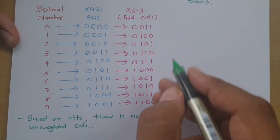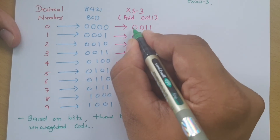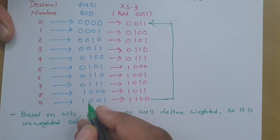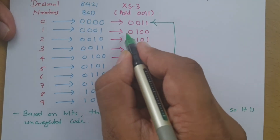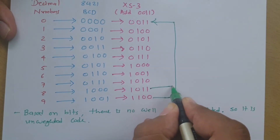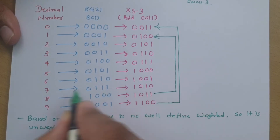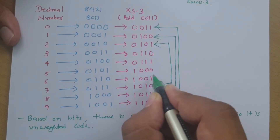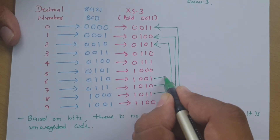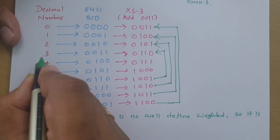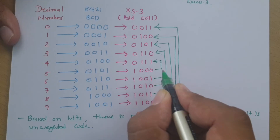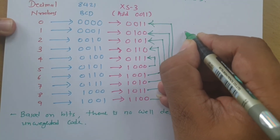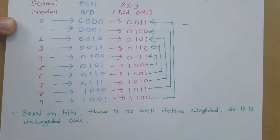We can verify this in our table. 9 in Excess-3 is 1100, and its complement is 0011, which is 0 — so 9 is the complement of 0. 8 is 1011 and 1 is 0100 — complements of each other. 7 is 1010 and 2 is 0101 — complements of each other. 6 is 1001 and 3 is 0110 — complements of each other. And 5 is the complement of 4. So Excess-3 follows the self-complementary property.